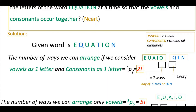The number of ways we can arrange the two groups — vowels as one letter and consonants as one letter — is 2P2, which equals 2 factorial. There are two ways for the first position and one way for the second, and all the vowels or consonants must be kept together.